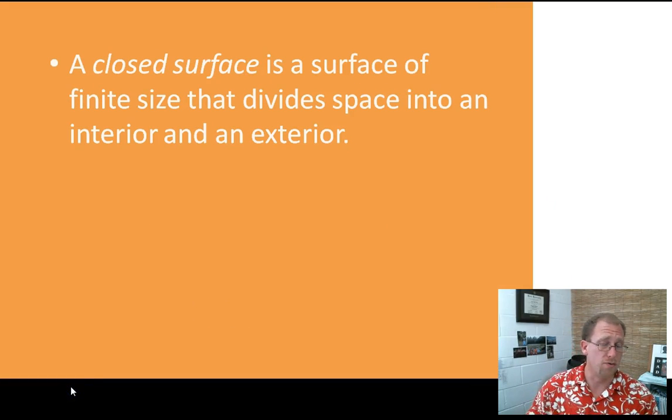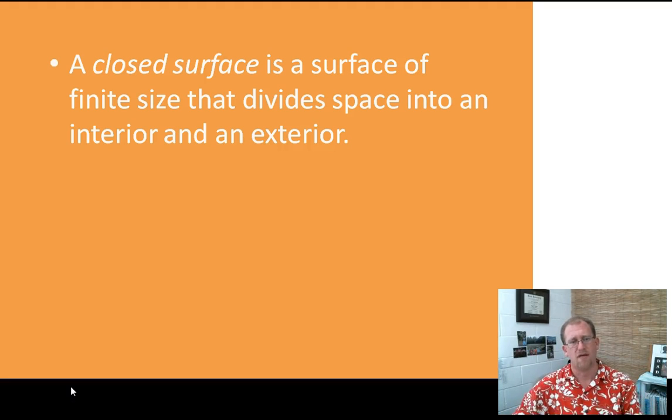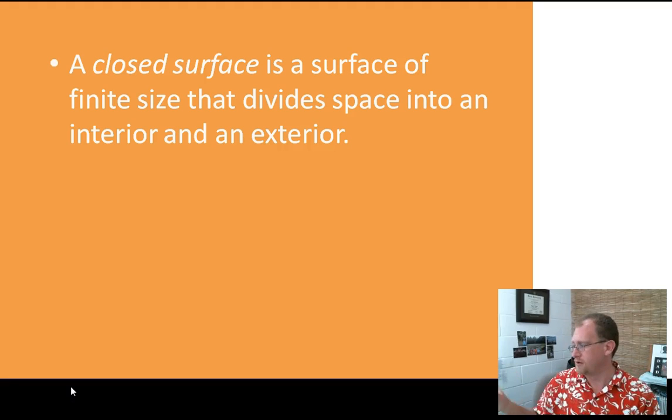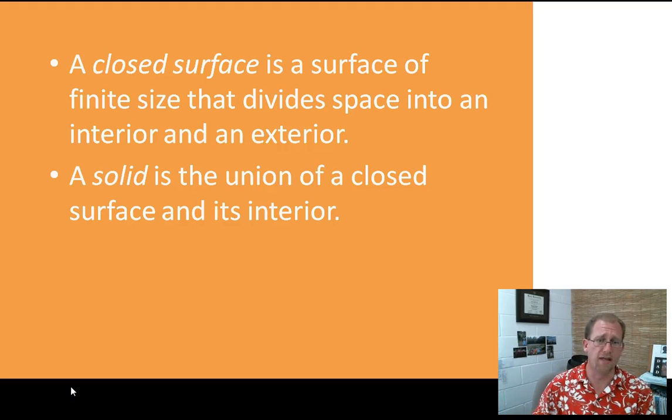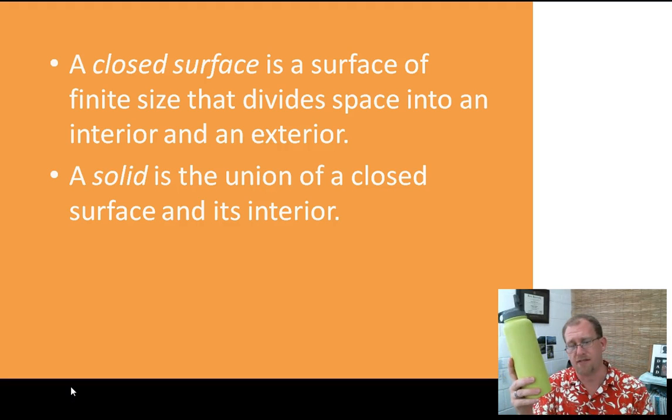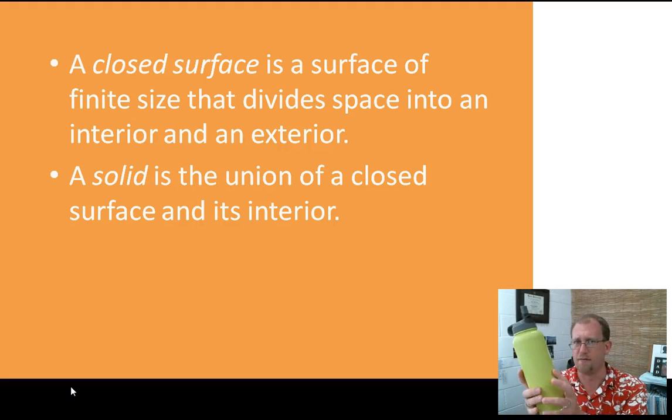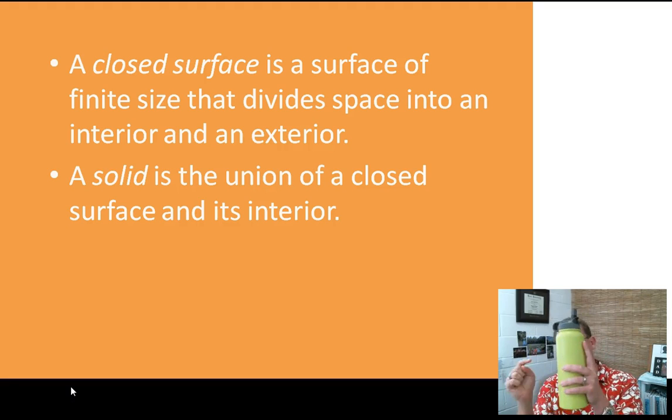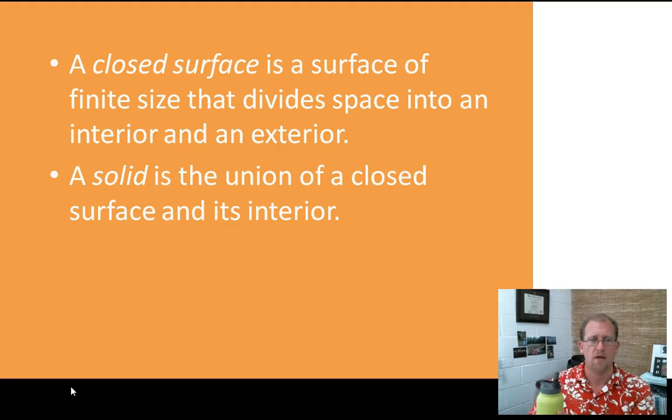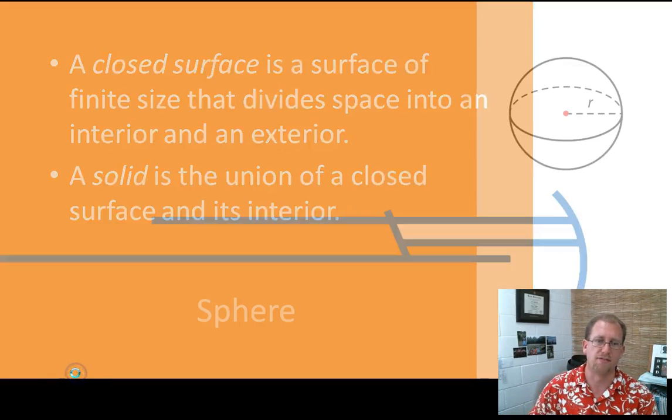A surface can be closed just like a curve can be closed, and that's a surface of finite size that divides space into an interior and an exterior. This object has a finite closed surface. There is an inside to it, and that's where my cold water is. A solid is the union of a closed surface and its interior. So the aluminum skin of this could just be the surface, but now if I consider not just the skin, but also everything inside—the ice, the water, the second layer, the vacuum space—if I consider that all one object, now I have a solid.